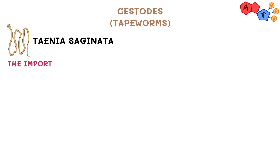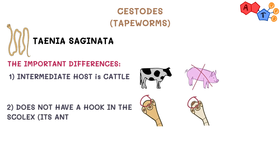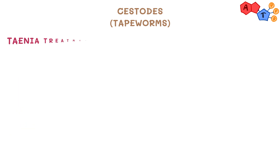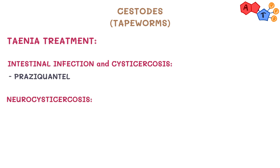Another Taenia we can talk about is Taenia saginata. The important differences between Taenia solium and Taenia saginata are: the intermediate host is cattle, unlike solium which is swine; it does not have a hook in the scolex, which is the anterior portion of the worm; and unlike Taenia solium, Taenia saginata does not cause cysticercosis. For treatment of intestinal disease and cysticercosis caused by Taenia solium, we use praziquantel, whereas for neurocysticercosis we use albendazole.